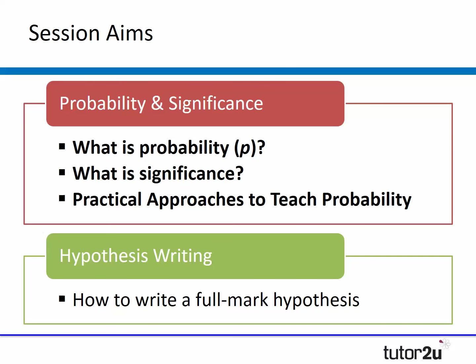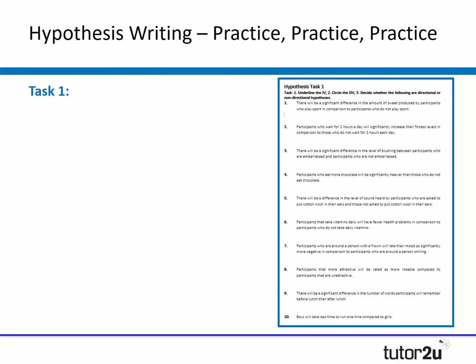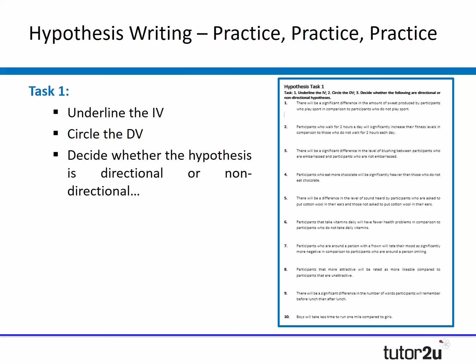So there are some practical ways to teach probability and significance with a nice activity to go with that. By popular demand, we've also put together a session on hypothesis writing — two simple but repeatedly effective activities to help students write full mark hypotheses. The real key to writing a decent hypothesis is to get students to practice, practice, practice. For Activity 1, I provide students with a series of 10 hypotheses where their job is to underline the independent variable, circle the dependent variable, and decide whether it's directional or non-directional.